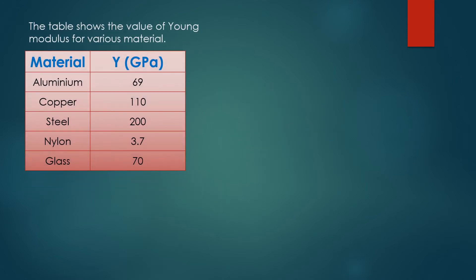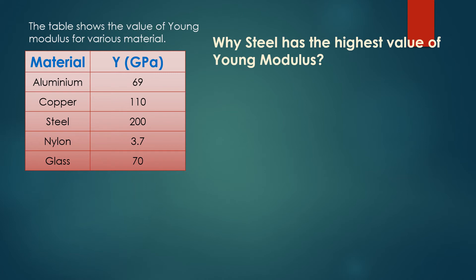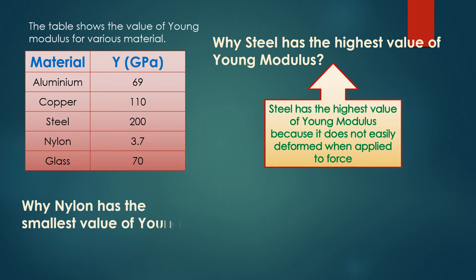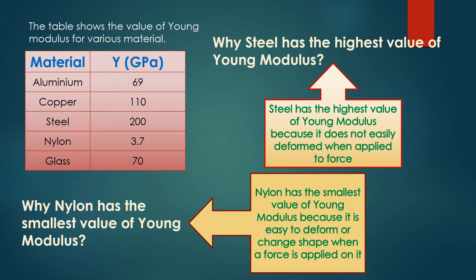The table shows the values of Young's modulus for various materials. Steel has the highest value of Young's modulus because it does not easily deform when a force is applied to it. Nylon has the smallest value because it is easy to deform or change shape when a force is applied on it.